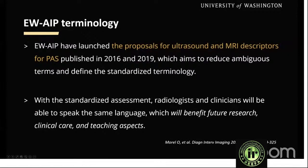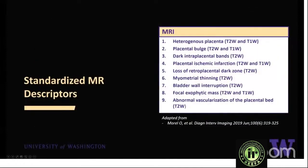There is inconsistency and variability in imaging nomenclature used for PAS interpretation, creating confusion among radiologists and clinicians and adding heterogeneity in data collection — which impacts patient care. The European Working Group on Abnormally Invasive Placenta published a proposal for standardized ultrasound descriptors in 2016 and MRI descriptors in 2019, aiming to reduce ambiguous terms. This is described in the article by Morrell et al. in 2019. We will use these standardized MRI descriptors going forward.